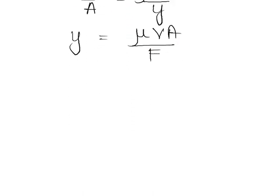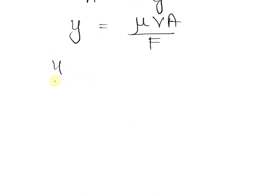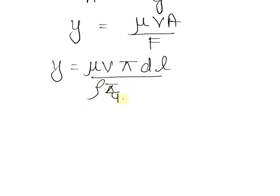We have the value for f and a so we will just substitute these values. We will have y equals to mu v. Area is pi d l and force is rho pi by 4 d square l g.